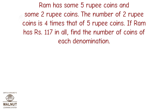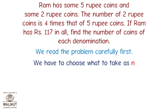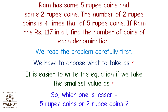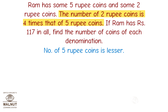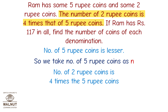Let's take a look at another example. Ram has some 5-rupee coins and some 2-rupee coins. The number of 2-rupee coins is 4 times that of 5-rupee coins. If Ram has rupees 117 in all, find the number of coins of each denomination. We take the smallest value as n. The number of 5-rupee coins is lesser, so we take the number of 5-rupee coins as n.